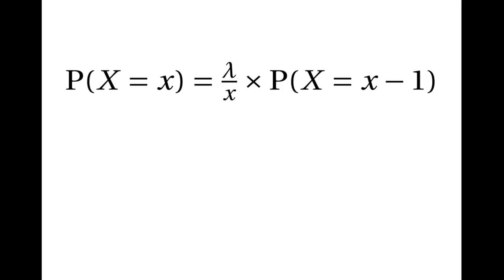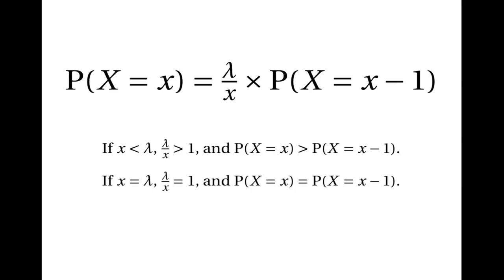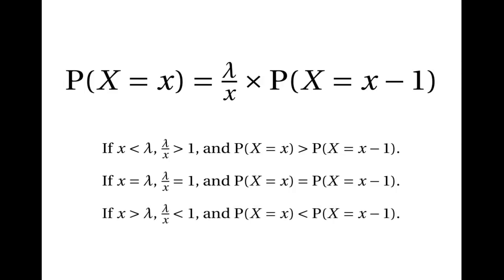Generalising from this, we can say that the probability of having x events is lambda divided by x times the probability of having x minus 1 events. This means that if x is less than lambda, then lambda divided by x will be greater than 1, and the probability of x events will be greater than the probability of x minus 1 events. If x is equal to lambda, then lambda divided by x will be equal to 1, and the probability of x events will be the same as the probability of x minus 1 events. Finally, if x is greater than lambda, then lambda divided by x will be less than 1, and the probability of having x events will be less than the probability of having x minus 1 events.